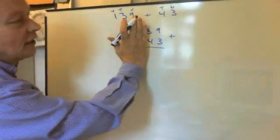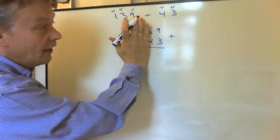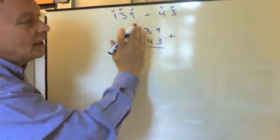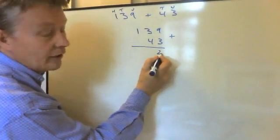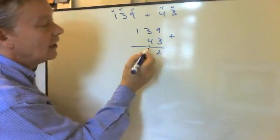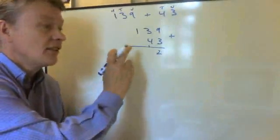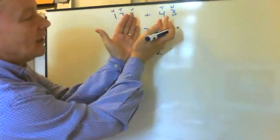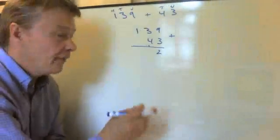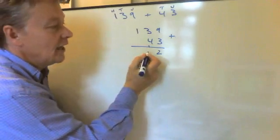and we're going to add these two numbers together. So in other words, we're going to firstly look at adding the units together. Well, if we add 9 add 3, we get 12. So we write down the two units, and then we carry 1, which is the 10, into the tens column. And then we add the tens column. So 3 add 4 is 7, and add this one here is 8.